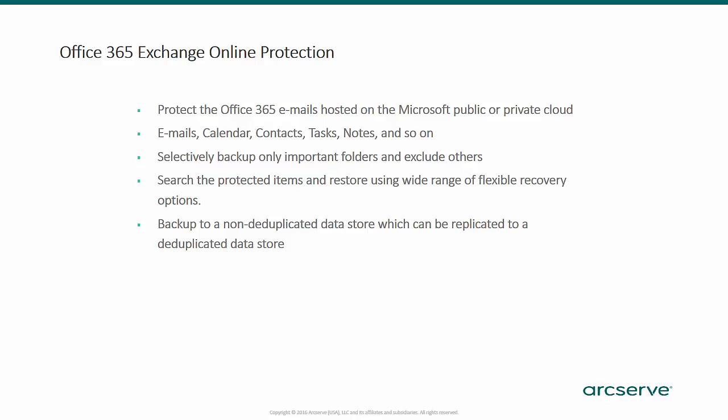ArcServe UDP 6.5 introduces a new feature to help organizations protect their Office 365 emails hosted on the Microsoft public or private cloud. Using this feature, users can secure and maintain a local backup of their Office 365 email data to eliminate the risk of data loss due to an outage or accidental deletion. Backup administrators can protect individual items such as emails, calendars, contacts, tasks, notes, and so on. They can search the protected items and restore using a wide range of flexible recovery options. By using the smart filter feature, administrators can selectively backup only important folders and exclude others such as sync issues, clutter, and so on. This feature reduces the backup window and also helps to save the crucial network bandwidth and storage.